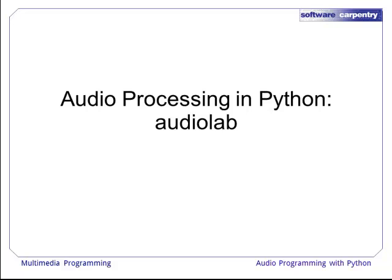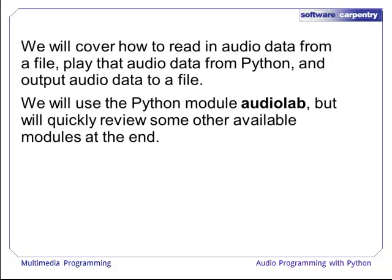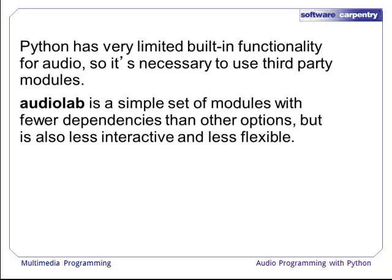We will now discuss how to do audio signal processing in Python, so that you can work with these audio samples. We will cover how to read audio data from a file, play that audio data from Python, and output audio data back to a file. We will use the Python module AudioLab, but will quickly review some other available modules at the end. Python has very limited built-in functionality for audio, so it is necessary to use third-party modules. You should refer to the episode on libraries if you need a quick review on how to work with external functions.